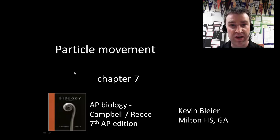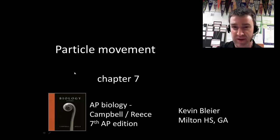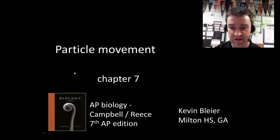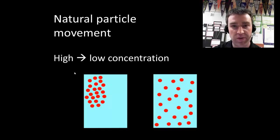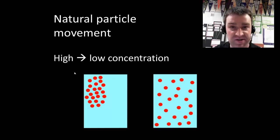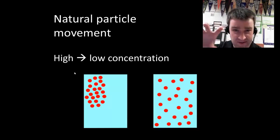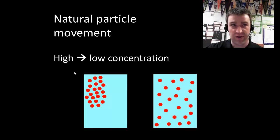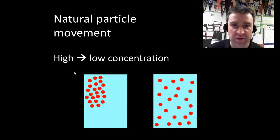Welcome to a discussion of particle movement. Now that we've discussed a little bit about the membrane structure, we're going to think about how particles actually move across cells. The way to think about how particles naturally move is that they generally just move from high to low concentrations. You can think about spraying a scent somewhere and it gradually will spread to be equally strong smelling throughout the room.